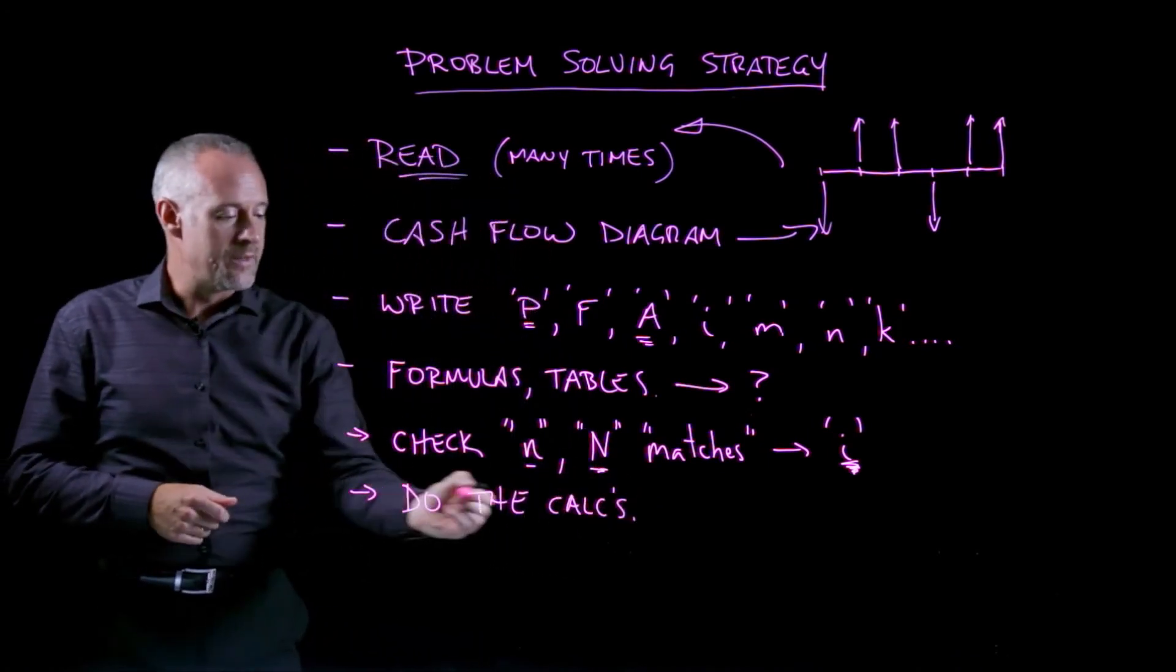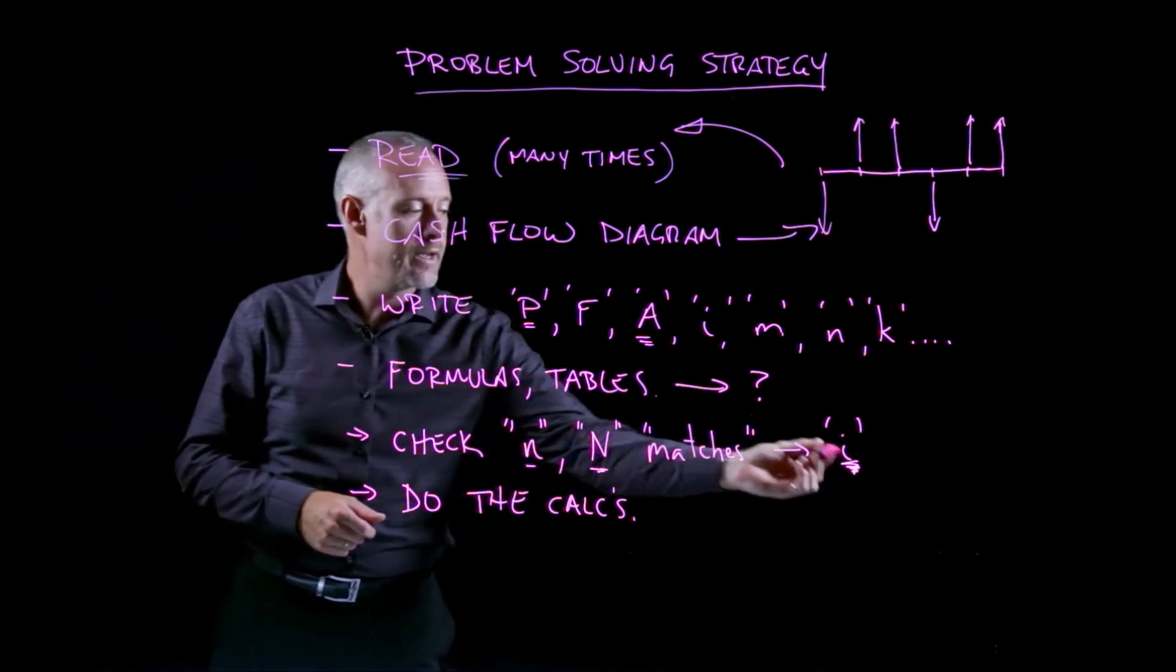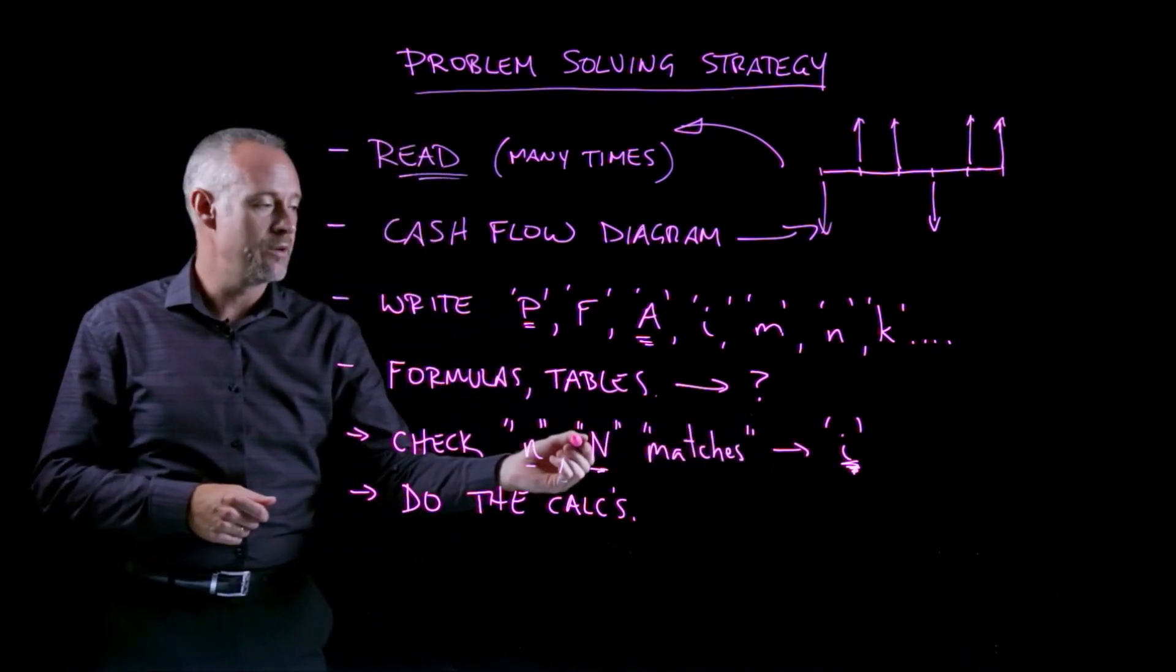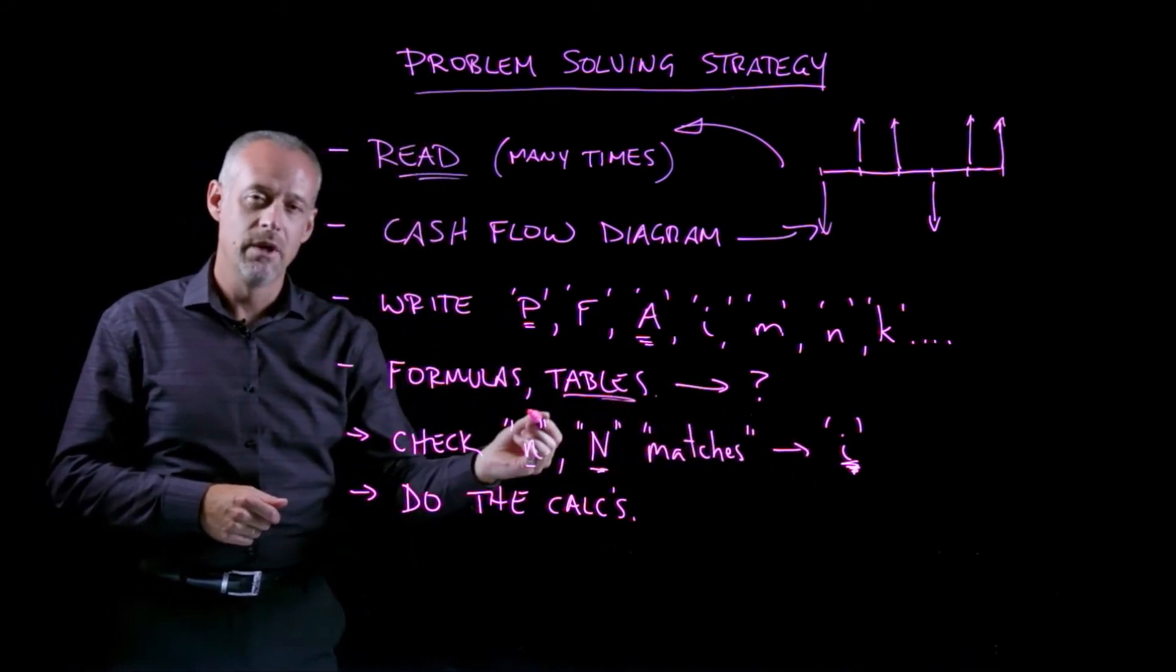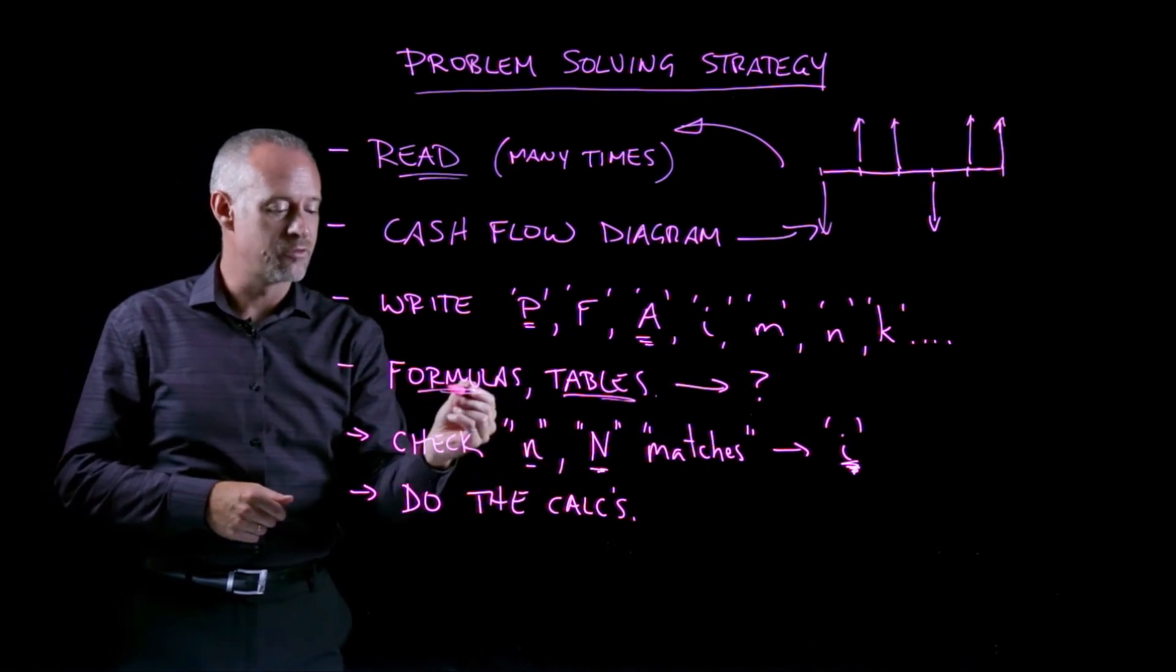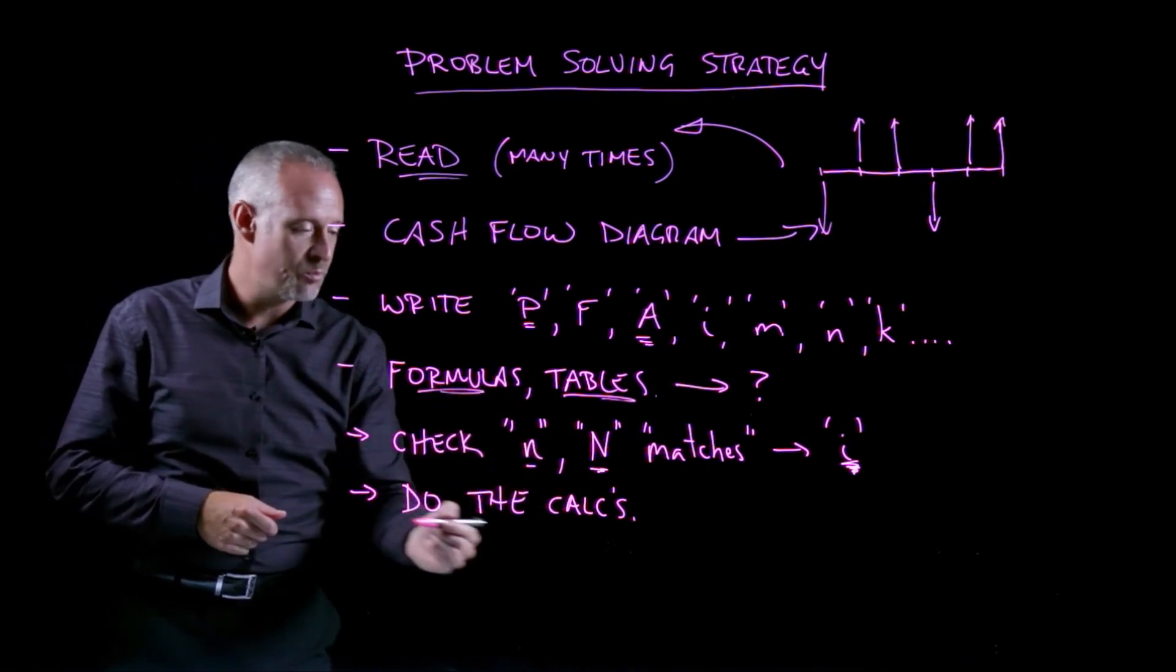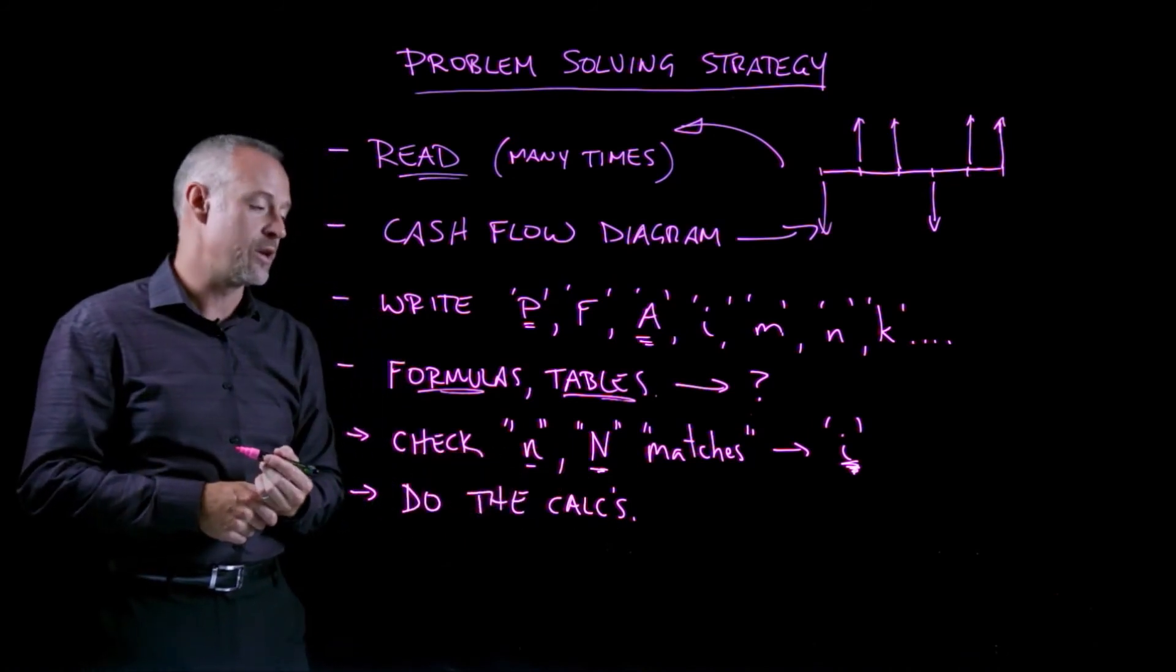And at this point, you can say, well, if I've got an I that is a nice round number, then maybe I can use tables. If I don't, I may have to use formulas. But at this point in the process, really just try and do the calculations.